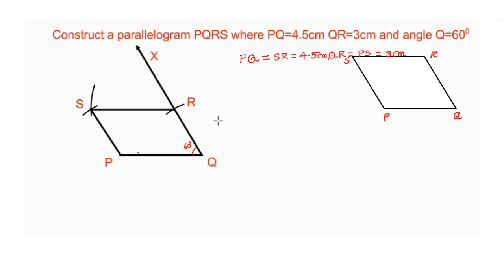This is the construction: PQ is 4.5 centimeters, QR is equal to 3 centimeters. This is how we construct a parallelogram with the given measurements.